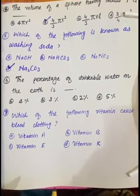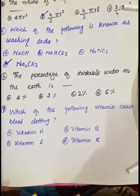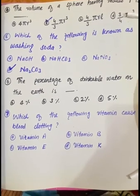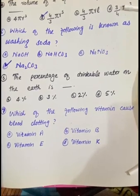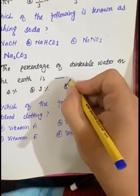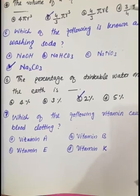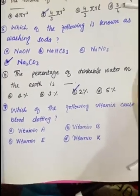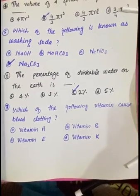MCQ number 6: the percentage of drinkable water on the earth's surface. Options: 4%, 3%, 2%, 5%. The actual correct answer is 1%, but since 1% is not given, the nearest option is C — 2%. So 2% is taken as the amount of drinkable water on the earth's surface.